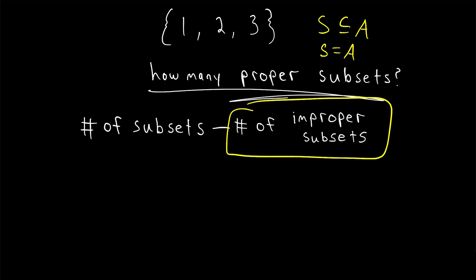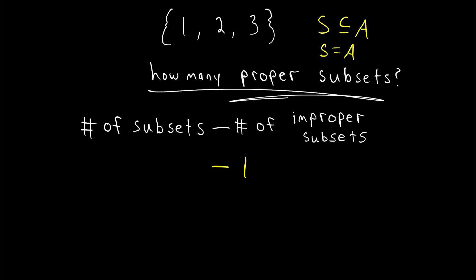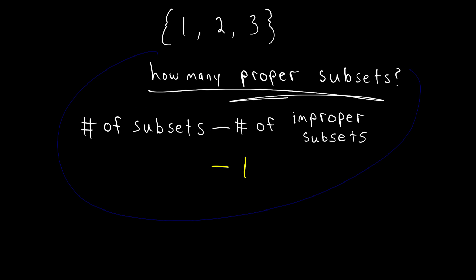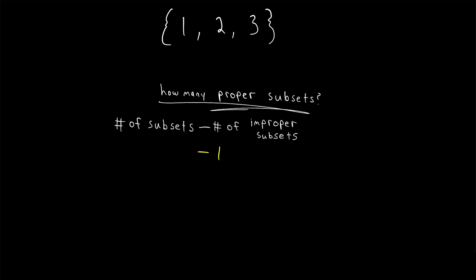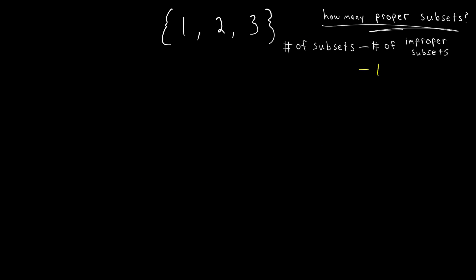A is an improper subset of A for any set A. So all that remains is to find the number of subsets that a set has, and a lot of you might already know how to figure that out. I'll leave a link in the description to my lesson dedicated to explaining it, but we'll also go over the reasoning here.